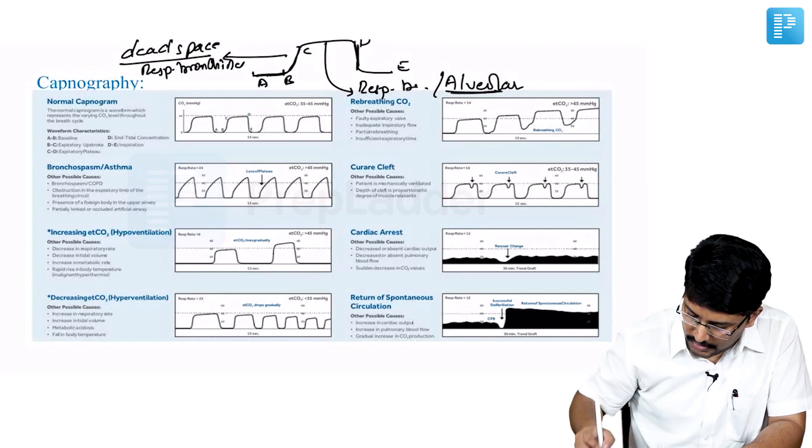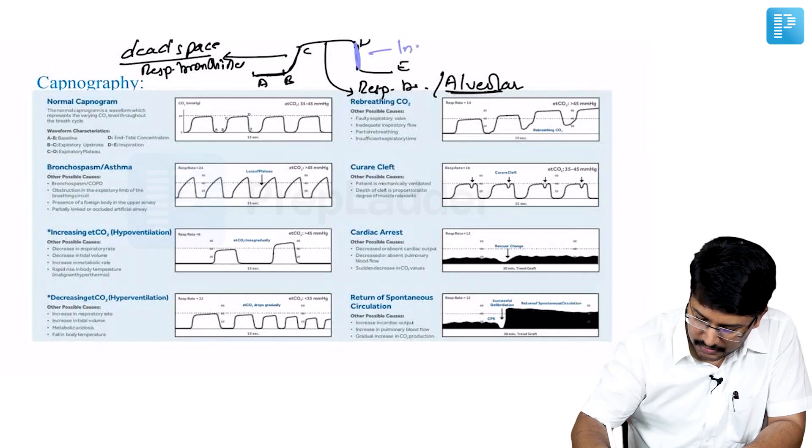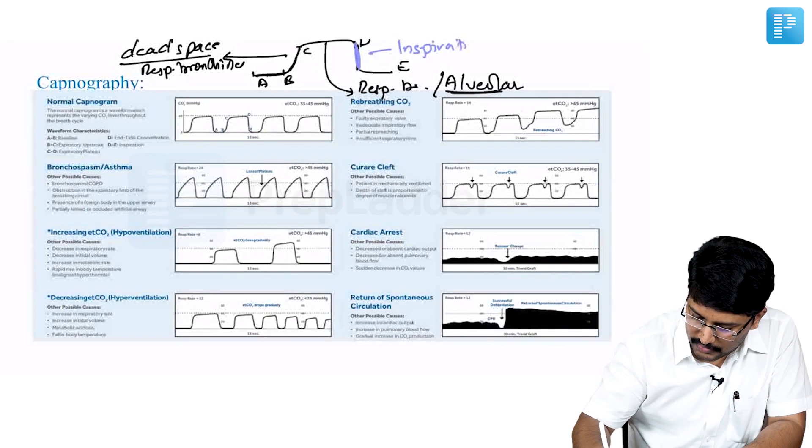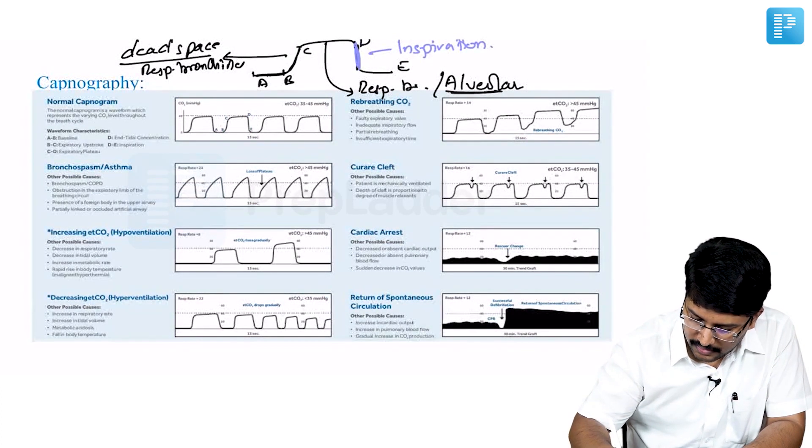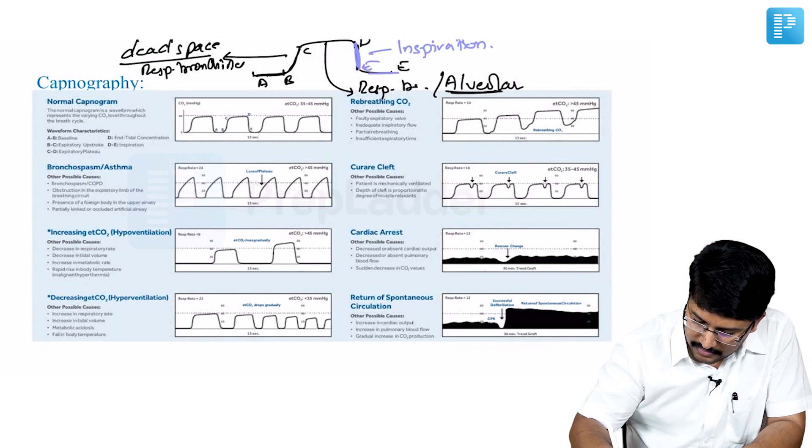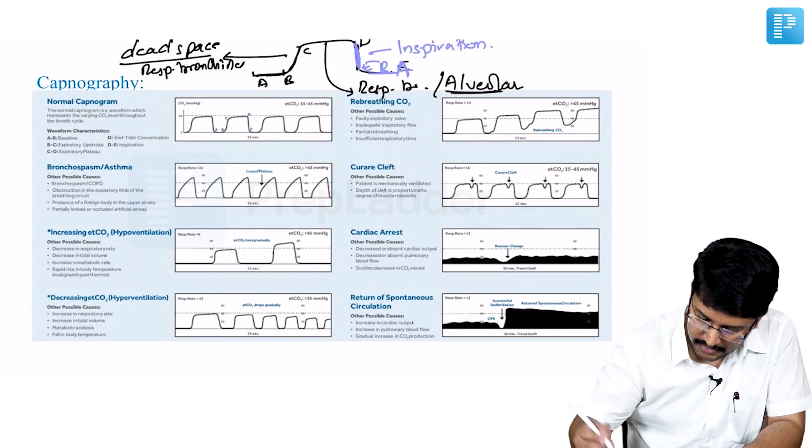From this D to E is basically when you start inspiration. So you are no longer expiring carbon dioxide, you are into inspiration. And this is the baseline again, starts with A here.